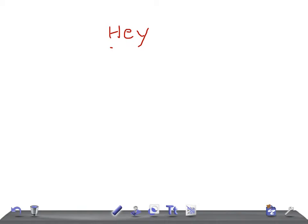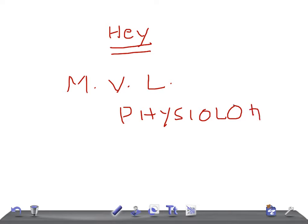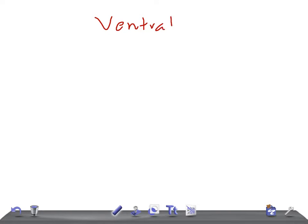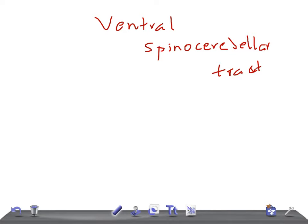Welcome back to All Unknown Law. This is a medical video lecture on physiology, and today we're going to talk about the ventral spinocerebellar tract. In previous two videos we discussed the lateral spinothalamic tract and anterior spinothalamic tract — their origin, course, function, lesion effects, and their first, second, and third order neurons. We'll cover this tract the same way.